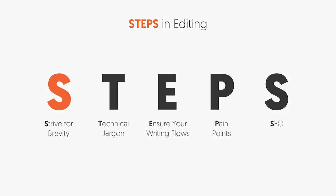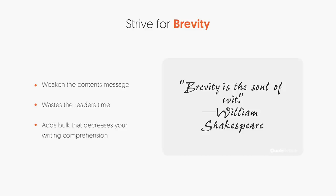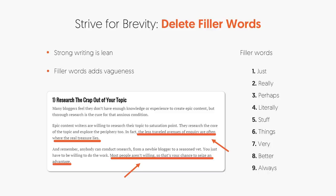The first step is to strive for brevity. A lot of people like adding fluff — they say, 'My competition has 2,500 words, so I'm going to write 3,000.' That's great if you can expand upon it with value, but if you're just adding fluff and wasting people's time, they're not going to like you. Try to remove filler words that aren't needed, like 'just,' 'really,' 'perhaps,' 'literally,' 'stuff,' 'things,' 'vary,' 'better,' 'always.' They don't really provide much value. If you can take these vague words out, you'll be better off.